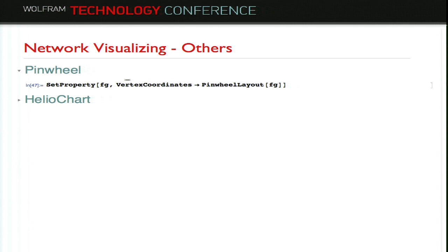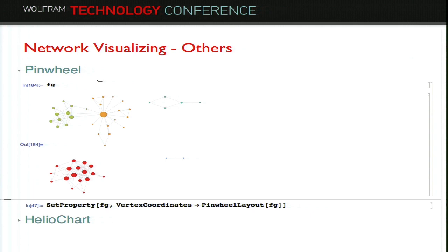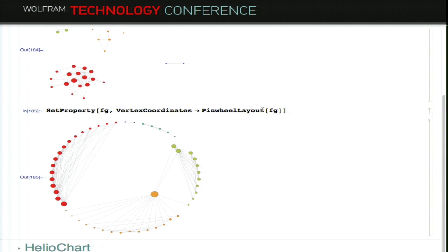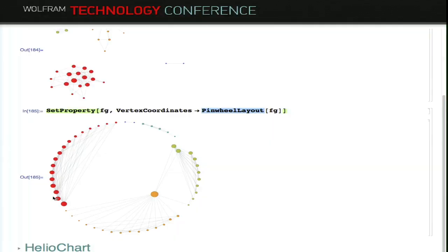Another way to visualize the friend network is a custom thin layout I wrote — it's not a built-in function, but I like this kind of layout. It groups by community, and inside each community nodes are sorted by vertex degree. The radius corresponds to higher betweenness centrality — if a node is closer to the center, it has higher betweenness centrality.